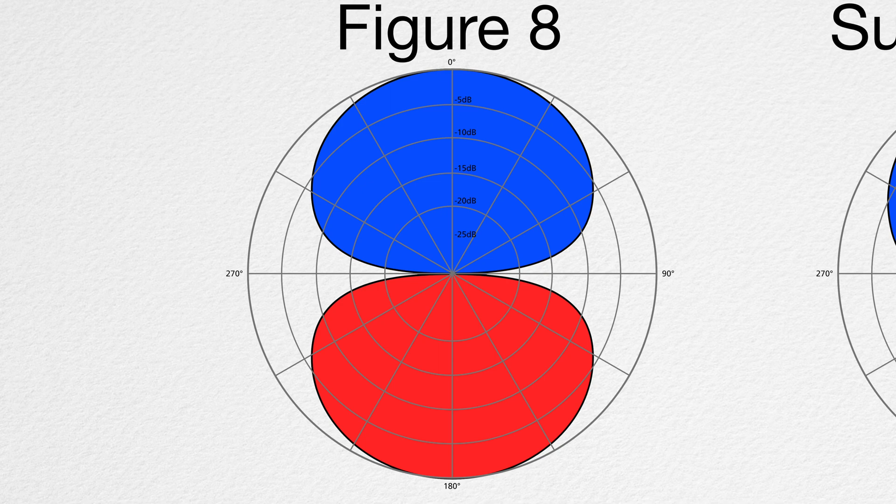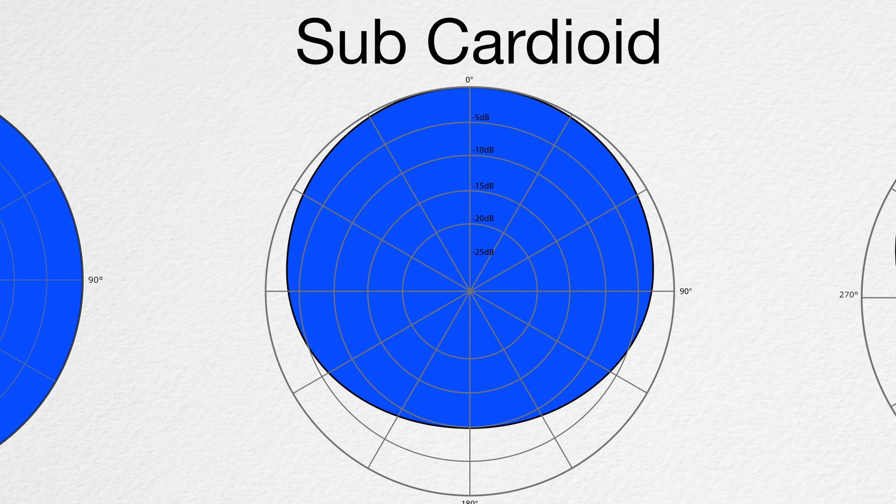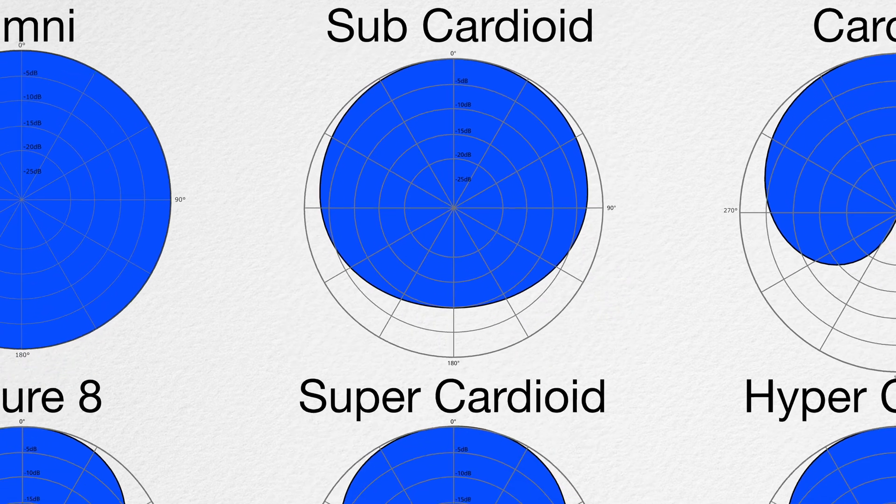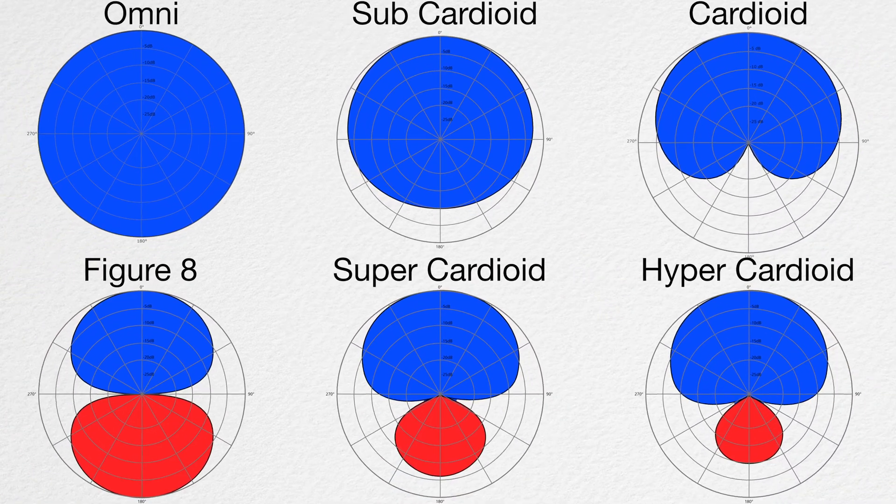Finally, there's a pattern called subcardioid or wide cardioid. This is anything less than cardioid, but not quite full omni. Confused yet? Don't worry about it. We'll see how to both create these patterns and why you would want to.